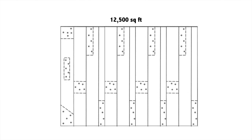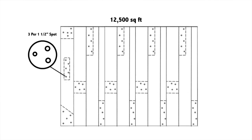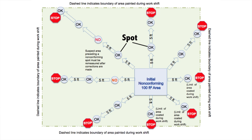Because areas of coating often exceed 1,000 square feet, our example will be based on this third tier. Let's assume that the total coated area is 12,500 square feet. A total of 15 areas must be measured — three in the first 1,000 square feet, and one additional area in each remaining 1,000 square foot area or portion thereof, in this example 12. This culminates in a total of 75 spot measurements and a minimum of 225 gauge readings.